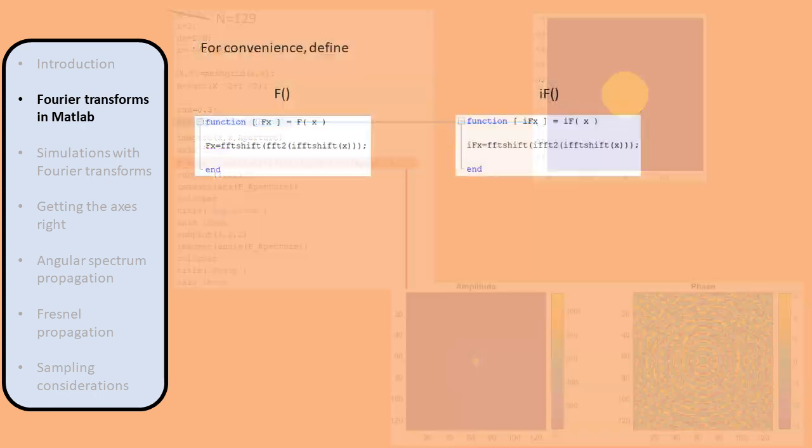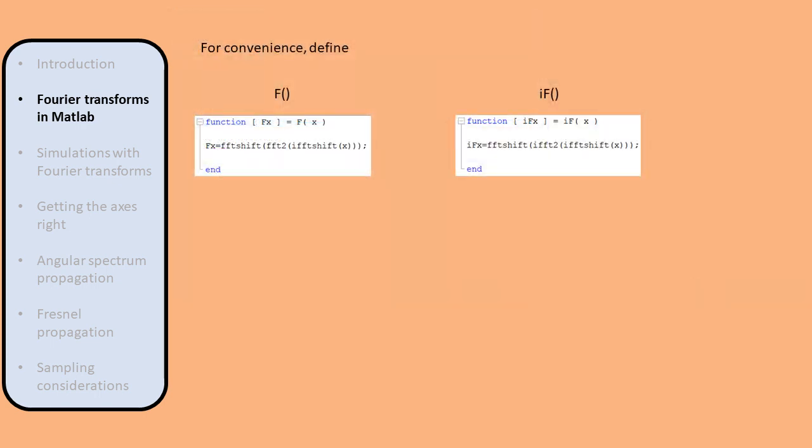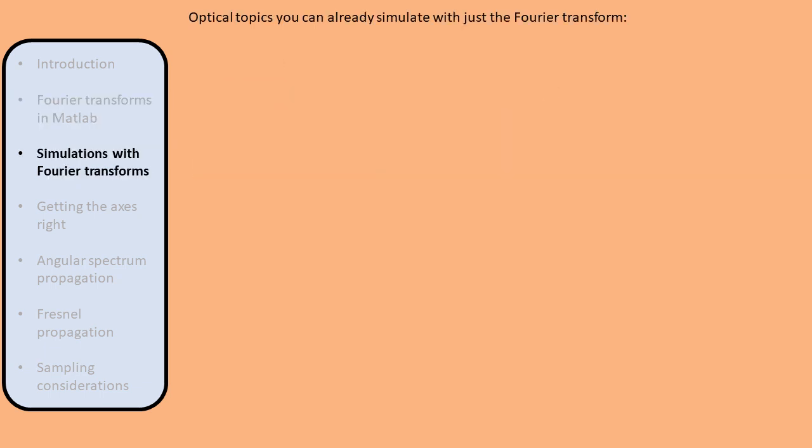To prevent us from repeatedly having to type FFTshifts when performing a Fourier transform, we may define new functions that have the FFTshifts built into them. Now that we know how to perform a Fourier transform in MATLAB, we can explore quite a few interesting optical topics which we have discussed in previous videos.